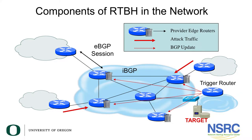When looking at what is important in terms of the different routers that you have to pre-configure, this diagram gives you an example. Very important is that we look at provider edge routers and also what's called the trigger router. The dotted lines show which routers have the BGP updates, and the heavier red lines show the attack traffic and where they're sourced from.